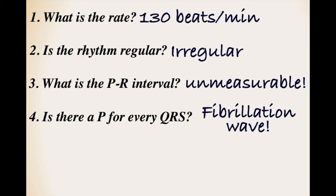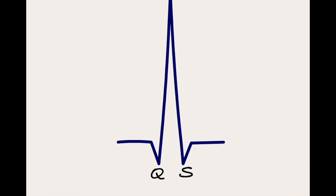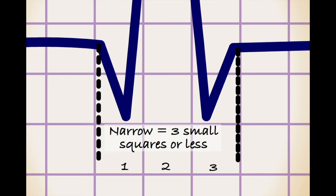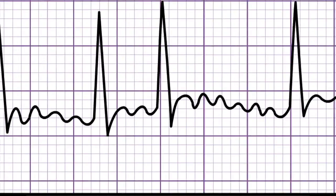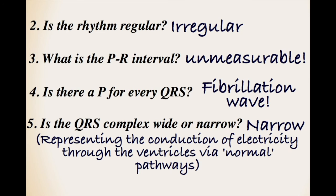The final step is to look at the QRS complex. During healthy conduction, we would expect the QRS complex to be narrow, by which we mean 3 small squares or less in width. As we can see in this ECG, the width of the QRS complex is less than 3 squares. We would typically expect the QRS complex to be narrow in AF, as we would expect the flow of electrical conduction to follow the normal pathways through the ventricles.